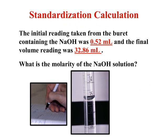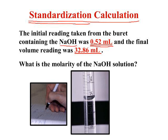As we go through the steps, remember that standardization is a titration — it's a particular way of analyzing the standard we're going to use to titrate our unknown. The initial reading taken from the burette containing the NaOH was 0.52 mL, and when we finished titrating, the final volume was 32.86 mL. Now we need to find the molarity of the NaOH.